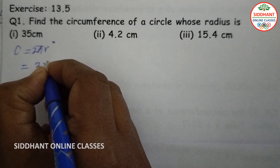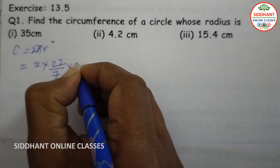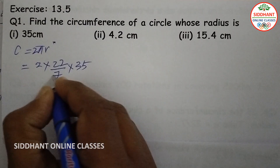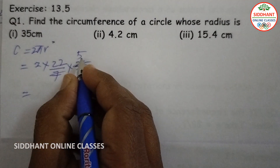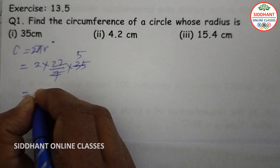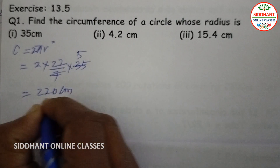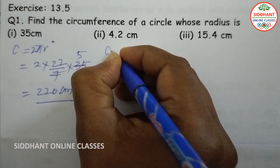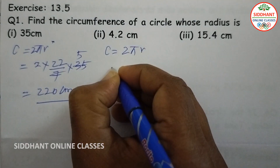For radius 35: 2 into 22/7 into 35. Here 7 cancels with 35 giving 5, so 2 into 22 into 5 equals 220 centimeters. That is the circumference.